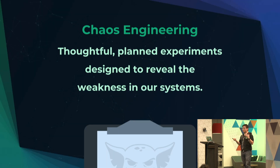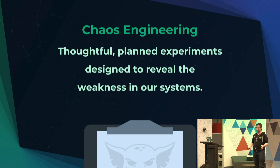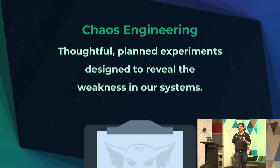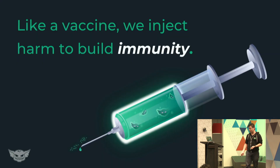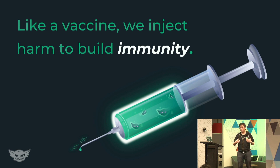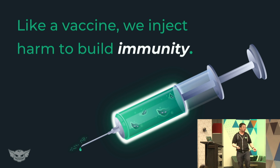So to level set everybody, I want to first talk about what chaos engineering is and how we define it. There are a lot of misconceptions — is it about breaking things, is it about just creating chaos? It's really not that. How we define it is thoughtful, planned experiments that are designed to reveal weaknesses in your systems. You're really trying to learn about what their weaknesses are and identify them so that you can build resilience. An analogy we use is similar to a flu shot or vaccination, where we inject just a little bit of harm — inject a little bit of a flu virus into your body so that you can build antibodies and immunity over time. So very similar to flu shots, but we're doing this with systems.